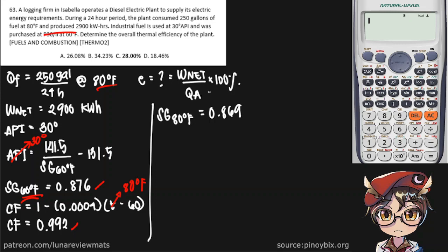So next, we need to find our QA. QA has the following formula: mass flow rate times our higher heating value. So let's try to find our mass flow rate first. And we know the mass flow rate to be equal to the volume flow rate times the density of our fuel.